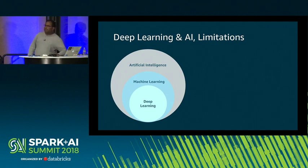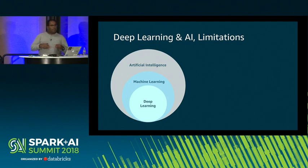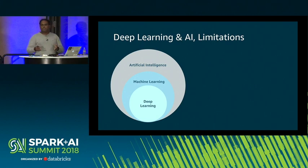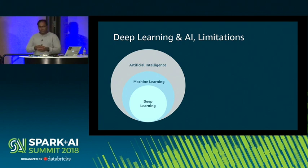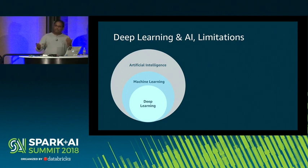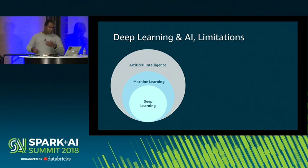Whether deep learning is leading to true AI is very debatable, and what deep learning focuses on today is a very small subset of what human intelligence is really capable of. I was reading an article by Michael Jordan — a computer science professor and statistician. His take was that what we're trying to do today is actually build services that help human intelligence and creativity. He calls it intelligence augmentation — IA instead of AI. I think that's a very good take.